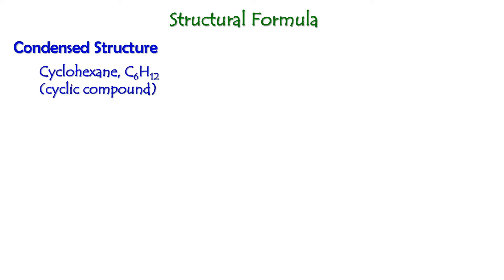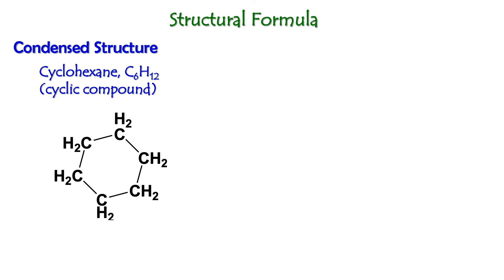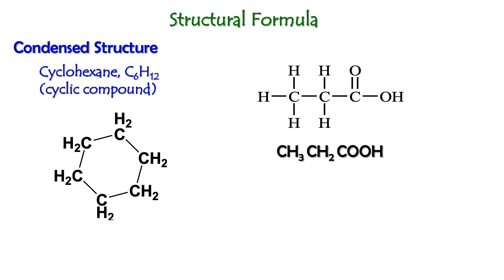The next example is cyclohexane with the formula C6H12, which is a cyclic compound, and the cyclic compound is written as follows. Another example is CH3CH2CHOOH to represent the condensed structure of a carboxylic acid.